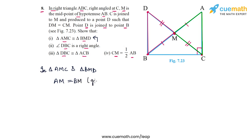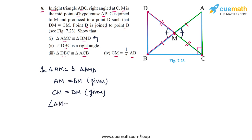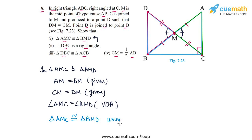In triangle AMC and triangle BMD: AM equals BM, since M is the midpoint of AB; CM equals DM, since CM was extended to D such that DM equals CM. Also, angle AMC equals angle BMD because these are vertically opposite angles. So we have two equal side pairs with the included angle equal.